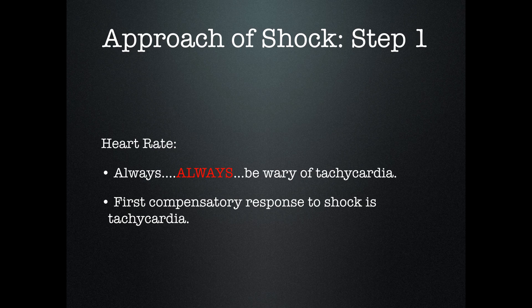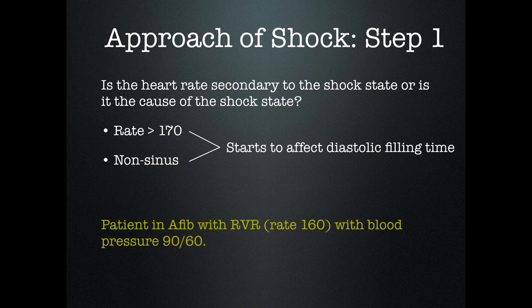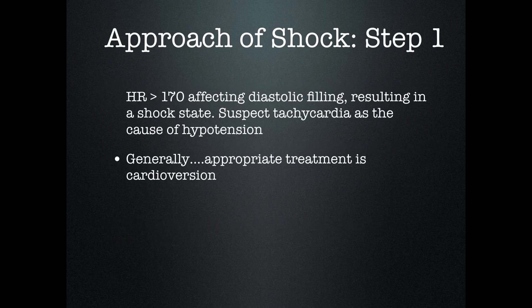The first thing I always look at is the heart rate — always be wary of someone who is tachycardic. You have to determine whether the tachycardia is the cause of the shock or shock is leading to the tachycardia. Typically, if the patient's heart rate is greater than 170 and it is not a sinus rhythm, that's probably going to be the cause of shock. The heart is beating too fast, not allowing for diastolic filling, so these are usually treated with electricity — unstable SVTs, A-fib, A-flutter. If the heart rate is less than 170, say 120 or 130, that's typically not the cause of shock; that's your compensatory mechanism.